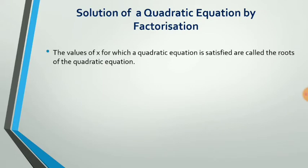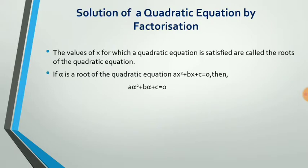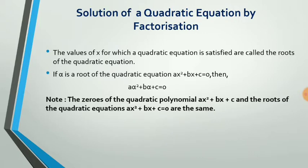The values of x for which a quadratic equation is satisfied are called the roots of the quadratic equation. We say zeros of the polynomial, but we always say roots of the quadratic equation. If alpha is a root of ax² + bx + c = 0, then a·alpha² + b·alpha + c = 0. Note that the zeros of the quadratic polynomial ax² + bx + c are the roots of the equation ax² + bx + c = 0.